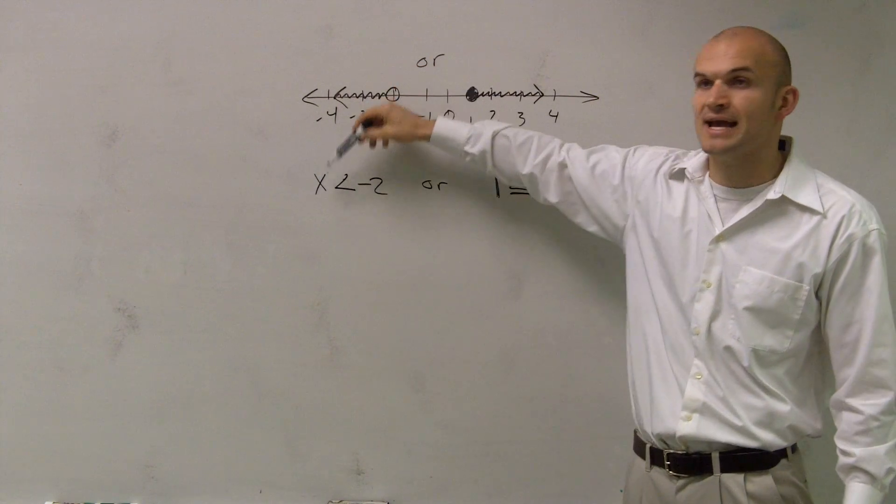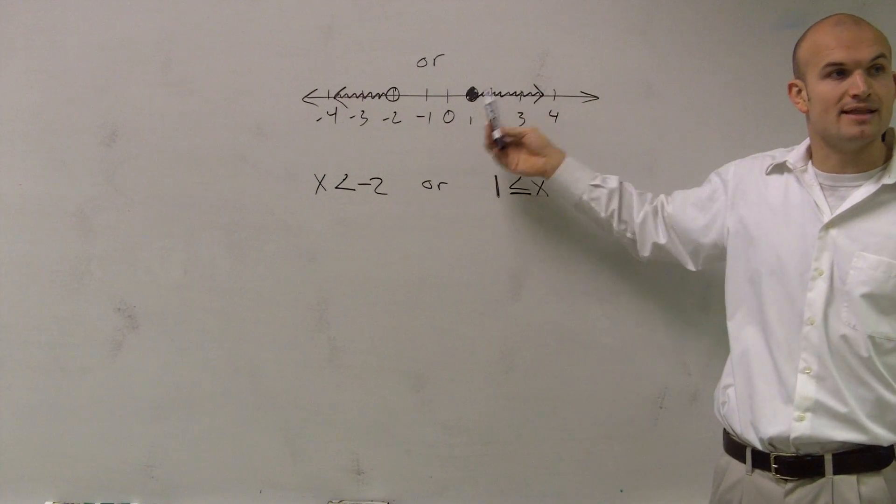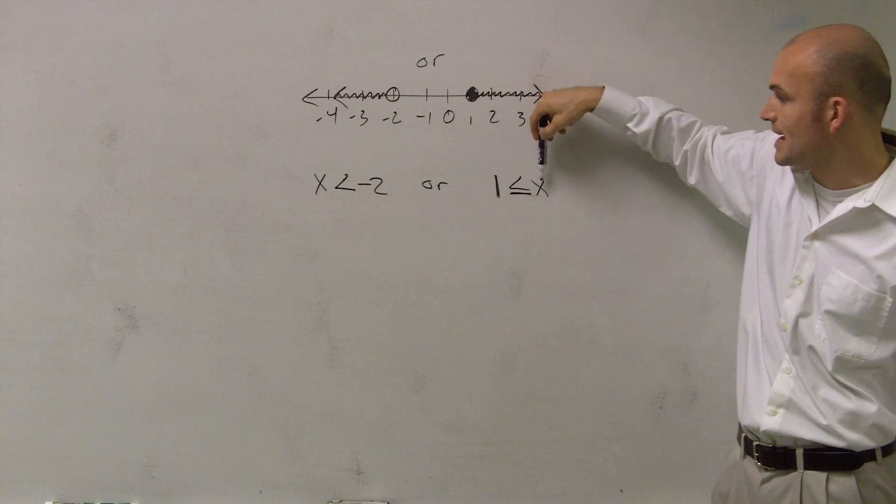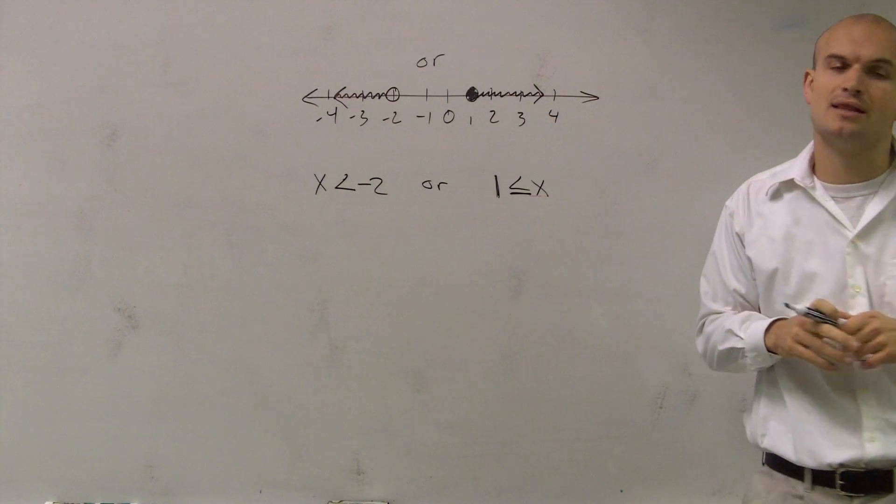So here the arrows are going to the left, so I'm going to say x is less than, all right? Here the arrow is going to the right. That means all the values that are greater than. So I say x is greater than or equal to one. It's really important for you guys to be able to say it out loud and help you out.